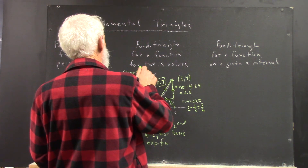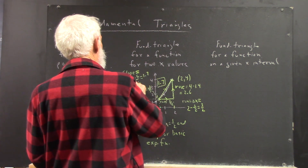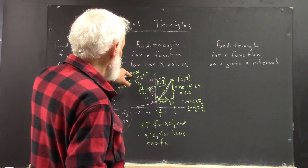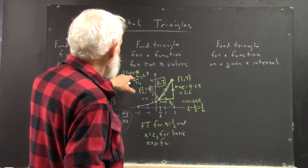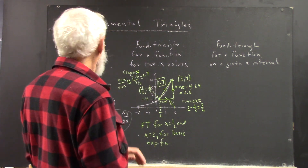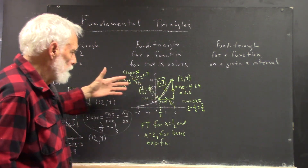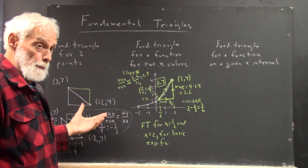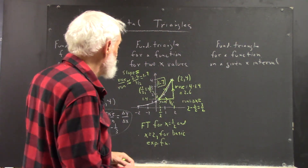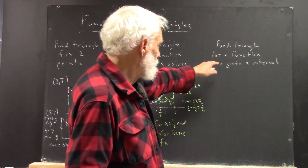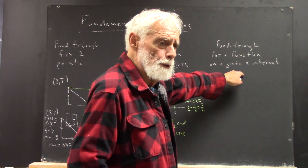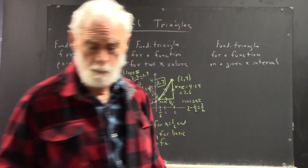So the slope is approximately equal to 2.6 over 3 halves, which is 1.7, and I write the slope as 1.7 on the triangle. Now, the process I want you to follow: when you do these problems, write out everything and show that you're following the procedures — don't shortcut them. This video is getting a little long, so we'll do another one for a fundamental triangle for a function on a given interval, because that's the most important type of fundamental triangle. Thank you.